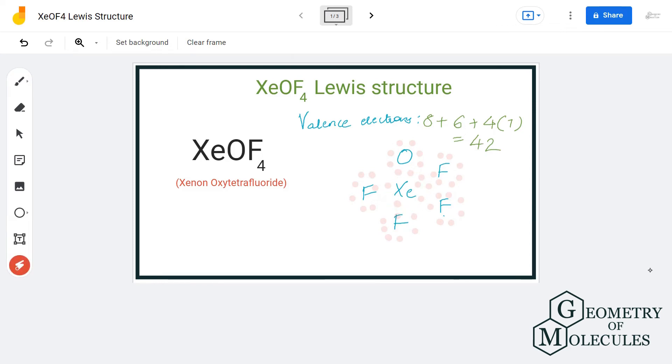molecule using the calculator we have linked in our description box below, or by following a simple formula, you will find that the xenon atom in this molecule has a +1 charge for this particular arrangement and the oxygen atom has a -1 charge.